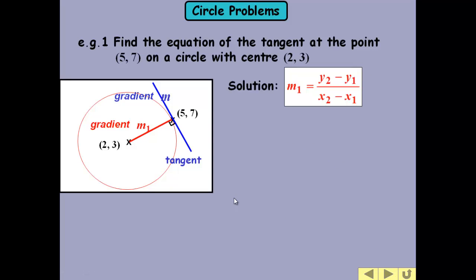So let's have a go at that. The gradient then of this line, the m₁, is 4 over 3. That tells us that the gradient we want for the tangent is minus 3 quarters.